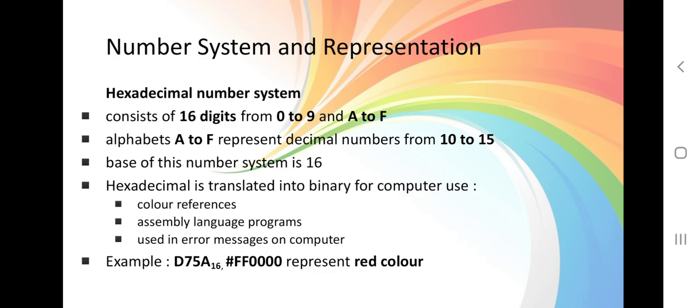We took one example, hexadecimal number. What is hexadecimal numbers? Hexadecimal number consists of 16 digits.